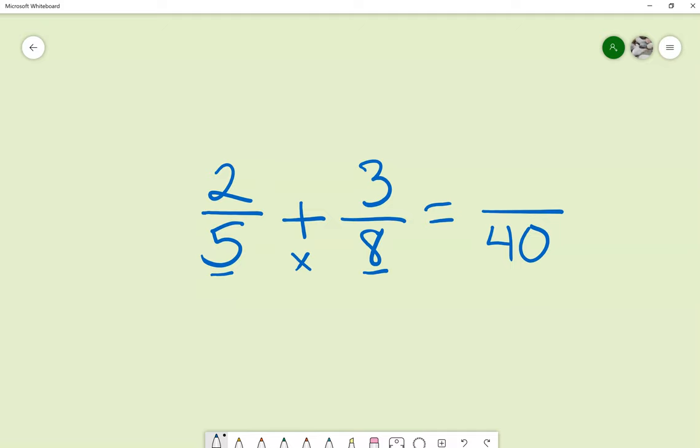Now cross multiply the numerator and the denominator, so that'd be 16 and 15. Add those together and that equals 31.